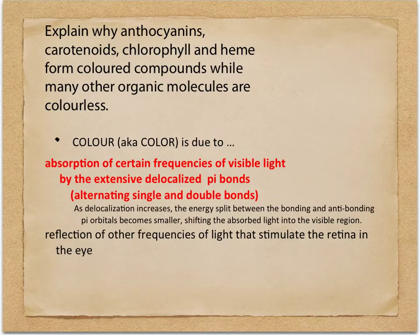So now we want to know why all of these are colored compounds, or they can form colored compounds, whereas most organic compounds are either colorless or white powders, white solids, or colorless liquids. The reason we have color in a lot of these pigments is the absorption due to the frequencies of visible light by all of these extensive delocalized pi bonds. In all of these structures, we have a lot of alternating single and double bonds. When we have all that alternating, we can have a lot of delocalized pi electrons, or electrons that are in that pi sphere.